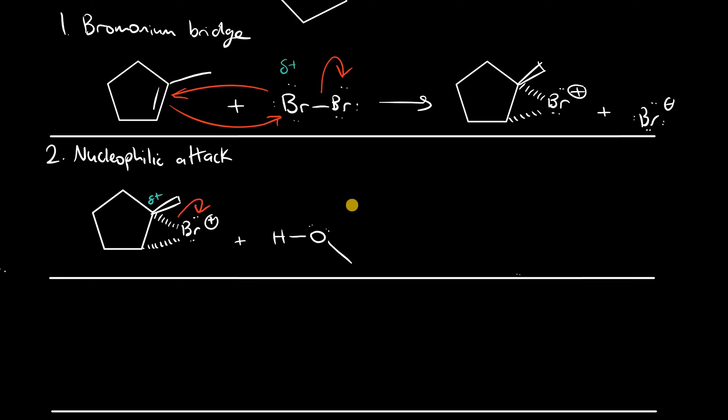So because of that, the nucleophile here attacks the more highly substituted carbon. And in this case, the bridge is forming into the plane so the nucleophile can attack from the front.